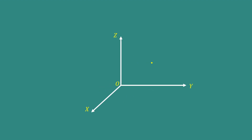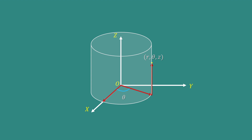If we consider cylindrical coordinate system R, theta, Z, then we have to move along X-axis, then turn through an angle theta and then move along Z-axis. Then we will get the exact location of this point in terms of R, theta, Z, that is in cylindrical coordinate system.